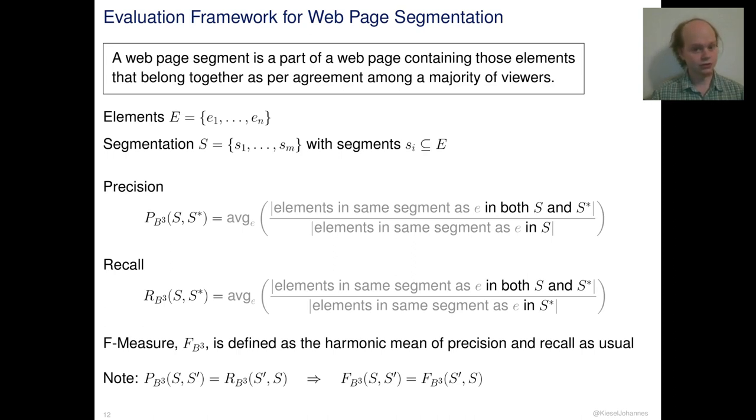Recall has the same numerator but is divided by the number of all elements segmented together in the ground truth segmentation S-star. As usual, the f-measure is the harmonic mean of both. But note that the f-measure is symmetric and can thus be used as a general measure of segmentation similarity even without ground truth.